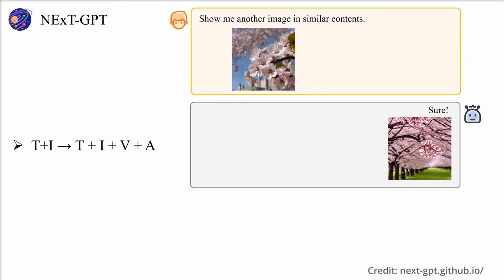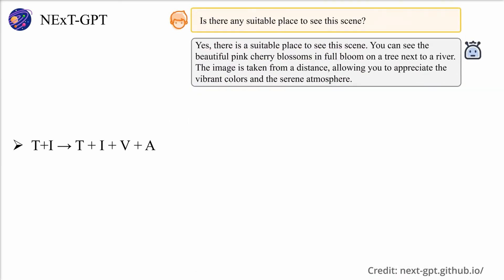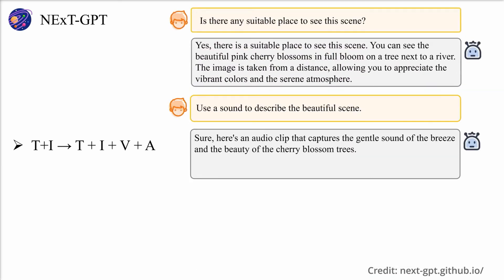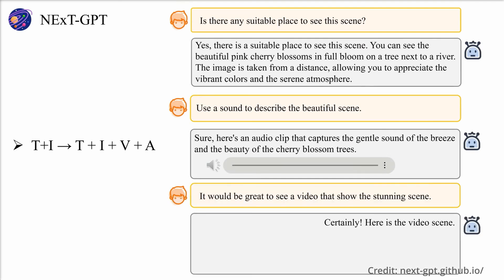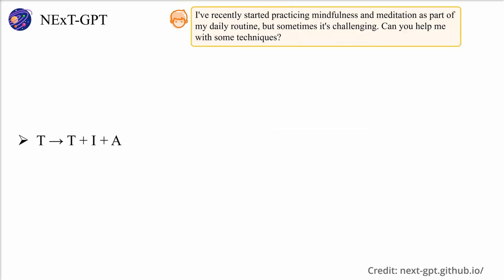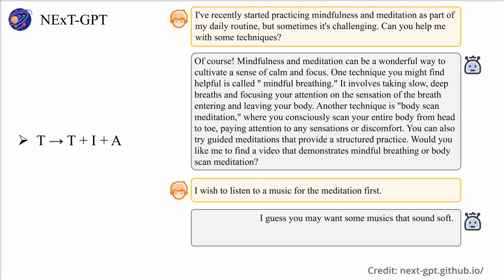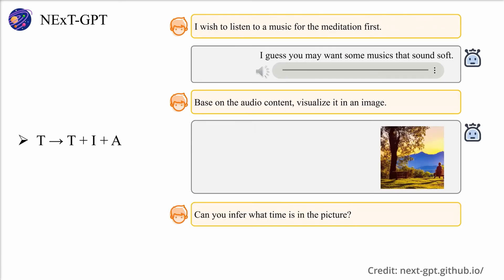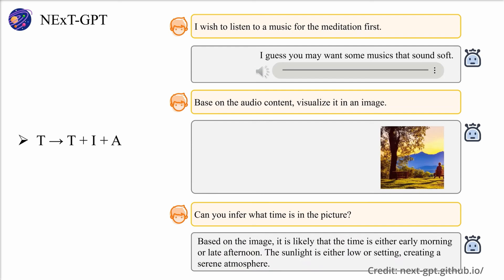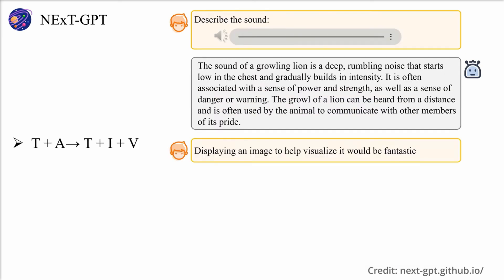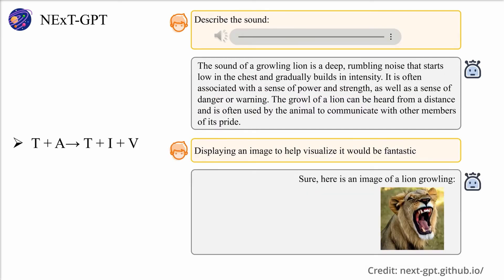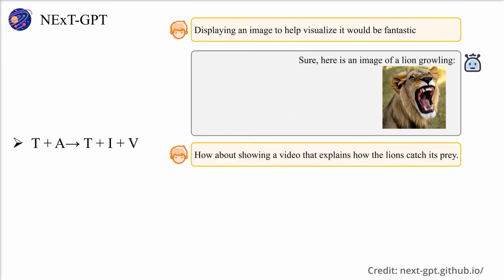As we progress towards achieving the holy grail of artificial general intelligence, multimodal large language models have been making remarkable progress, but they've been predominantly constrained to input-side multimodal understanding, lacking the capability to produce content across various modalities. Importantly, the human experience is multifaceted. We perceive the world and communicate through diverse modalities, necessitating the development of MMLLMs that can interact and generate content in any form.